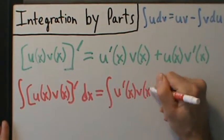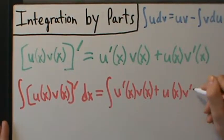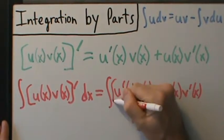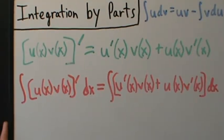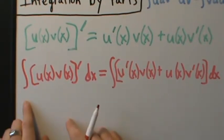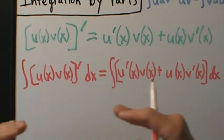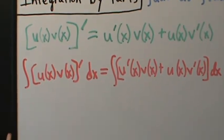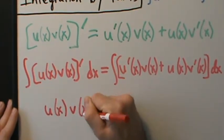So we have the integral of u prime of x times v of x, plus u of x times v prime of x, dx — and we need the brackets because this dx is on everything. Now if we integrate a derivative like this, the integral and the derivative are like inverse operations, they cancel each other out. So what we have on the left side is just u of x times v of x.